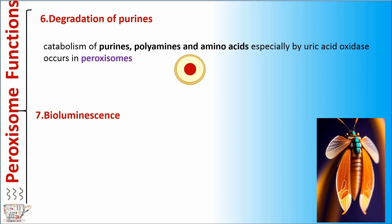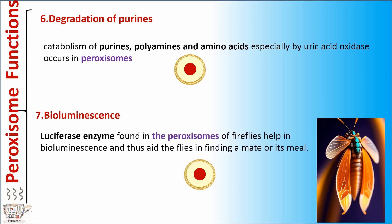Function number seven: bioluminescence. Luciferase enzyme, found in the proxysomes of fireflies, helps in bioluminescence and thus aids the flies in finding a mate or their meal.